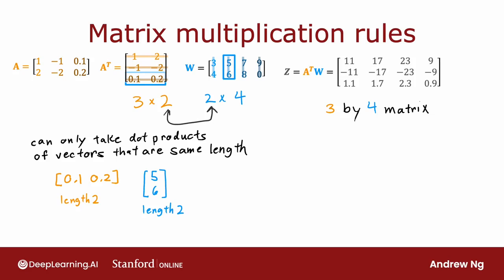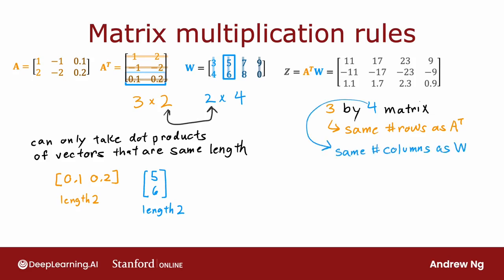Matrix multiplication is valid only if the number of columns of the first matrix — A transpose — equals the number of rows of the second matrix W, so that dot products are taken between vectors of the same size. The output Z = A transpose W has dimensions 3 by 4 — the same number of rows as A transpose and the same number of columns as W.